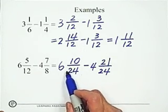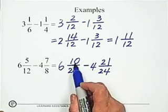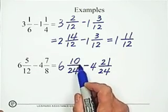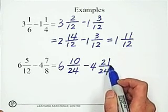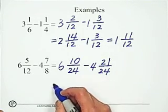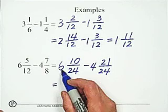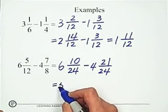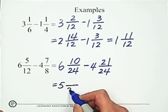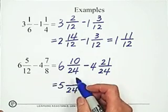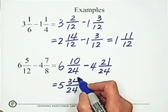Because even 6 is greater than 4, but the fraction portion, 10 over 24 is less than 21 over 24. That's why we need to do borrowing. Borrowing 1 from 6 becomes 5. Add the denominator to numerator, 34.